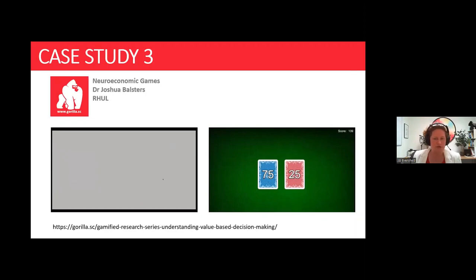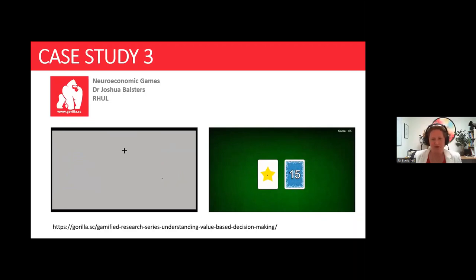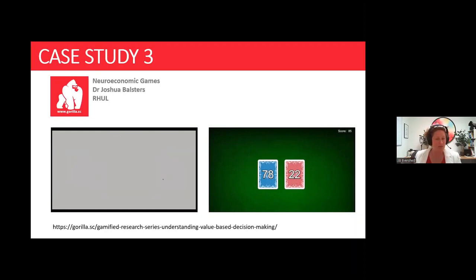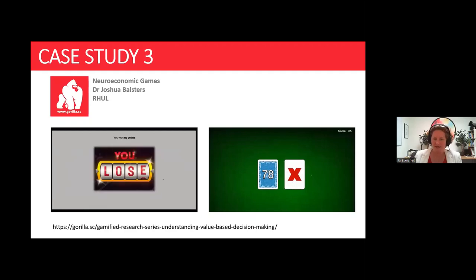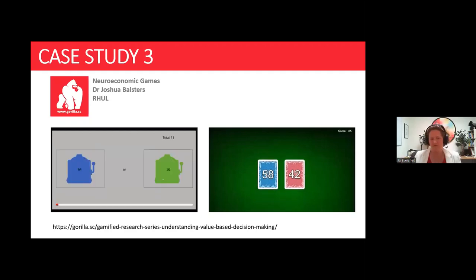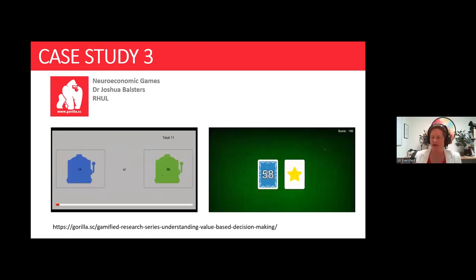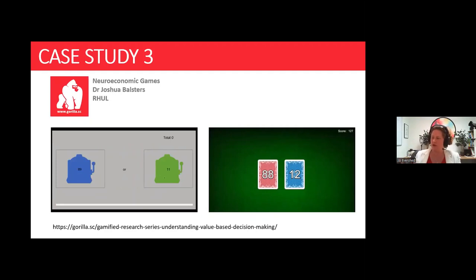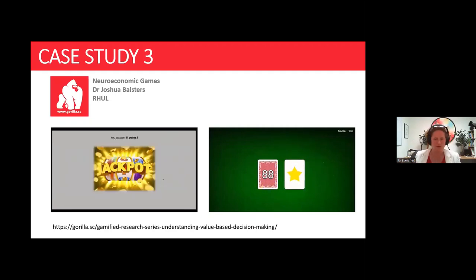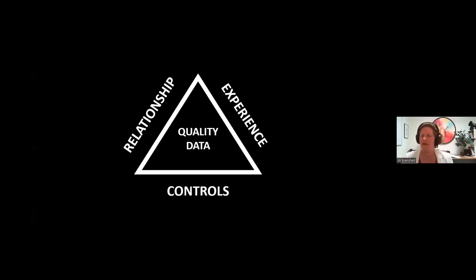This is a two-alternative forced-choice task common in economics and decision-making — an n-armed bandit where you choose between slot machines or cards and try to find the one that pays out the most. Your score tells you whether you're doing well or badly. The gamification involved a narrative — you're in a casino, try to win — your score provides feedback, and easy-to-understand, pleasing feedback: a bunch of stars when you choose correctly, or smoke when you get it wrong.